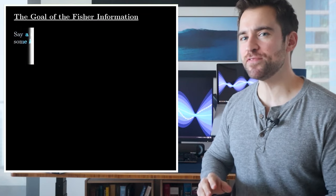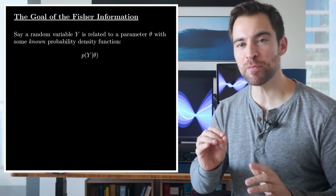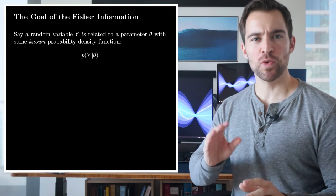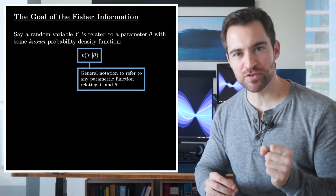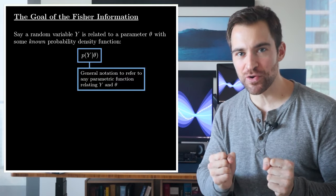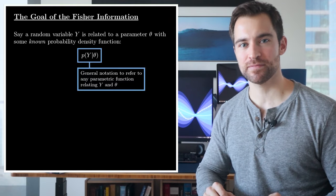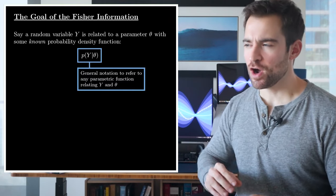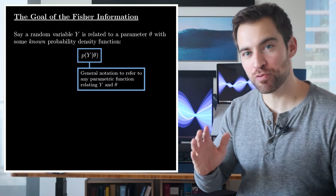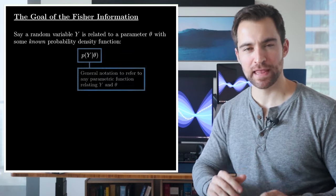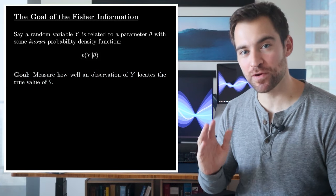First, let's say random variable y is related to a parameter, which is just a single number here, by some known probability density function. We write that generally with this expression, which represents any function that accepts both an observation of y and a parameter value, then gives us a number showing the likelihood of that observation according to that parameter. Now, here's the question.